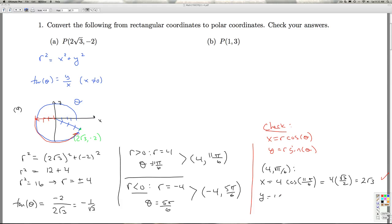And the y is 4 sine 11 pi over 6, which is 4 times negative 1 half, which is negative 2, which is the y coordinate I'm supposed to get.